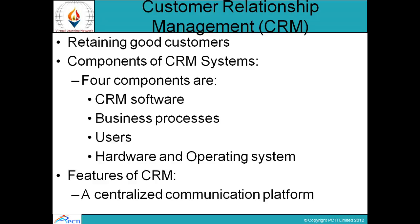The CRM system is used for two processes: management control and operational control. Users are the third component — the primary users who use our CRM system, like workers, who perform management and operational controls. The fourth component is hardware and operating system, such as Unix or Windows.